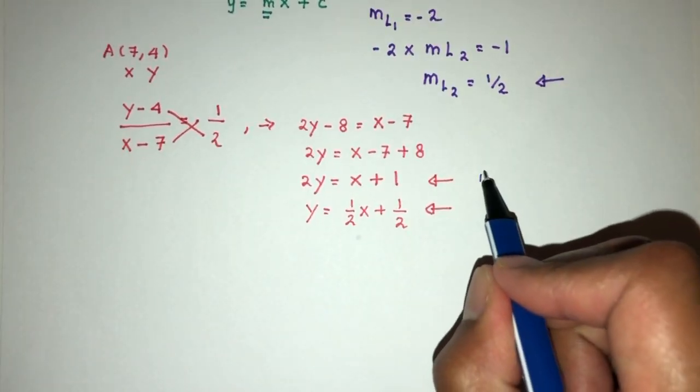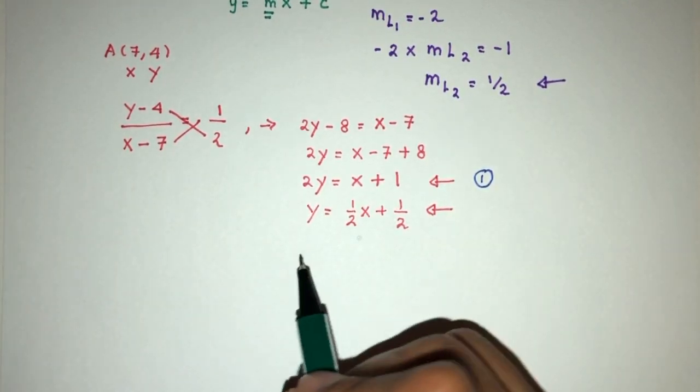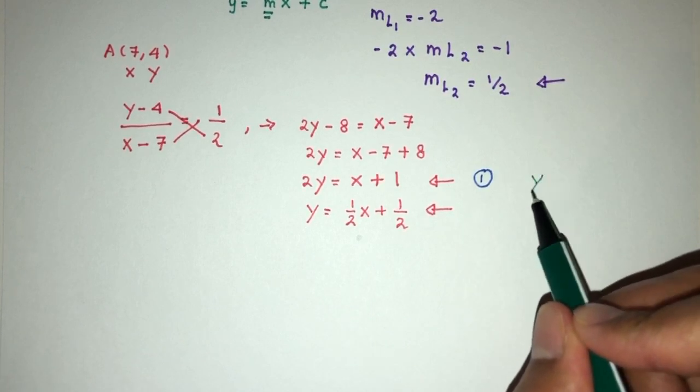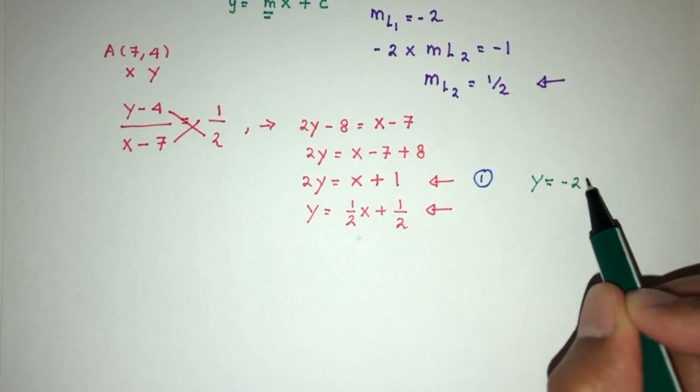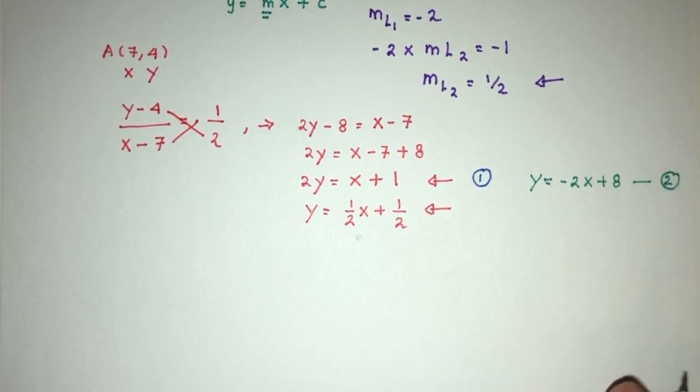So this is my equation number one for the line L2. And my equation number two for the line L1 was found to be y equals minus 2x plus 8. Equation number two. Let's solve this.